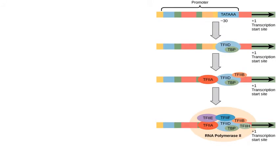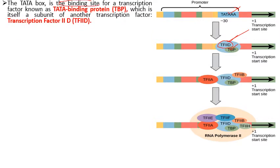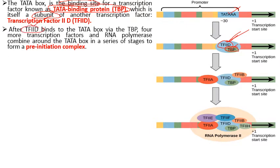In the first step of initiation, special proteins known as TATA-binding proteins (TBP) come to the TATA box and bind to it, followed by another transcription factor. The TATA box is the binding site for TBP, which itself is a subunit of the transcription factor TFIID. After binding of TFIID to the TATA box via TBP, four more transcription factors and RNA polymerase assemble around the TATA box in a series of stages, forming a complex known as the pre-initiation complex.